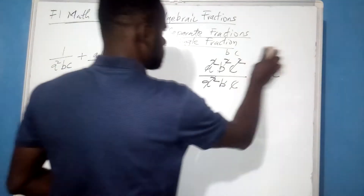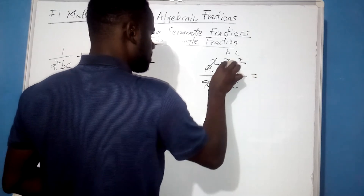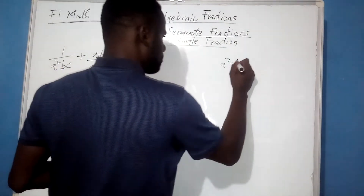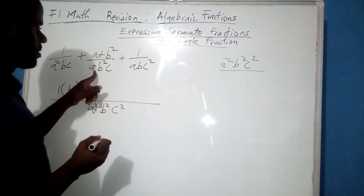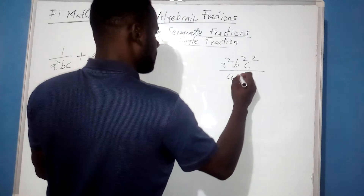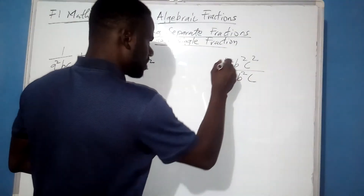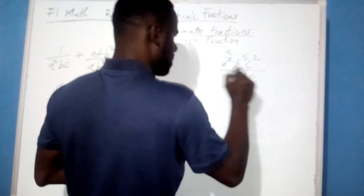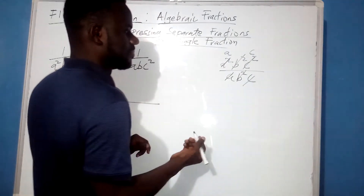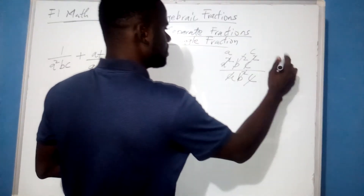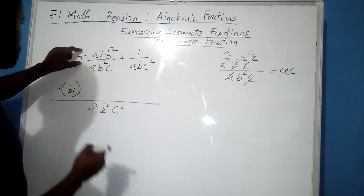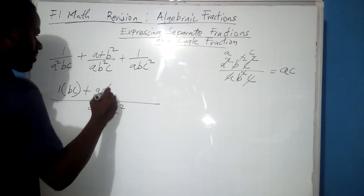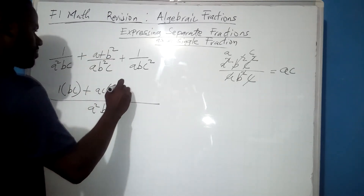To avoid writing so much, I will just repeat the same procedure. The LCM A squared B squared C squared all over the second denominator, which is A B squared C. A will cancel with one A, leaving one A. B squared and B squared will cancel. Then C will cancel with one C on the numerator, leaving one C remaining. So A times C gives us AC. This AC is the result of dividing the LCM by this denominator. So AC multiplies the numerator, which is A plus B squared.